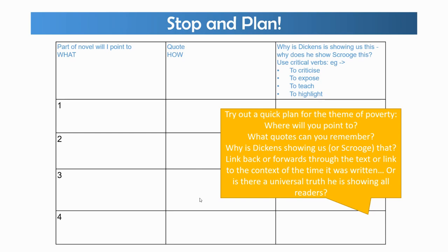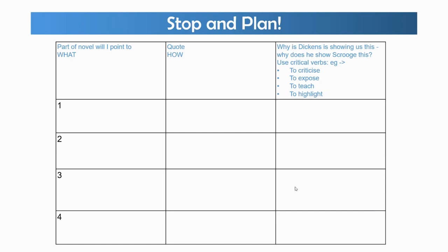Why don't you pause the video now and try a quick plan on the theme of poverty? Try and think of three or four different parts of the novel you would point to about poverty. You might start, for example, with a mention of the charity collectors who come around and ask Scrooge for money — that first brings up the theme of the poor. What quote could you use for them, and how will that allow you to talk about what Dickens is showing Scrooge, us, or the Victorian people? Maybe there's a universal truth he's showing to all readers — even a modern reader can learn that we should look after the poor members of our society, or that money doesn't buy happiness, as shown through the Cratchit family.